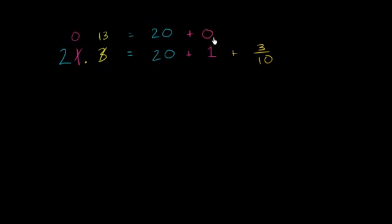And we essentially wanted to write that 1 that we took away from the ones place in terms of tenths. So if we were to write this in terms of tenths, it would be 10 tenths plus the 3 tenths that were already there. Plus 3 tenths. And so this is going to be equal to 13 tenths.